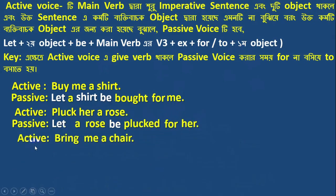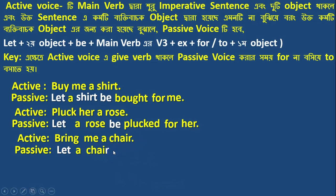Active voice: 'Bring me a chair.' Passive voice: 'Let a chair be brought for me.' Here, 'a chair' is the direct object placed first after 'Let', followed by 'be brought', and 'for me' at the end.